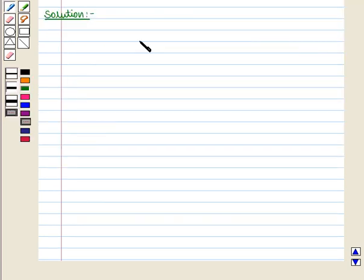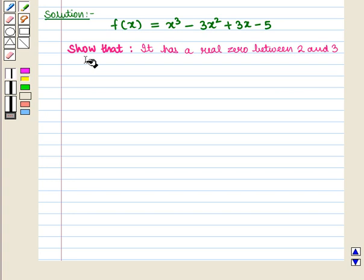In this question, we are given a polynomial function f(x) = x³ - 3x² + 3x - 5 and we have to show that it has a real zero between 2 and 3.